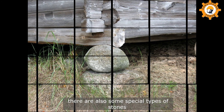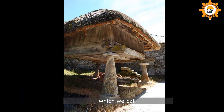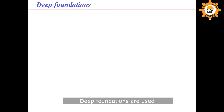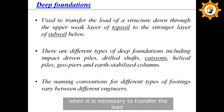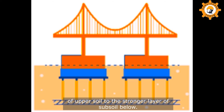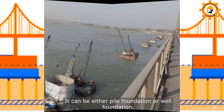Among these stones, there are also some special type of stones which we call stadal stones. Deep foundations are used when it is necessary to transfer the load of a structure through the upper weak layer of soil to the stronger layer of subsoil below. Broadly speaking, there are two types of deep foundations: pile foundation or well foundation.